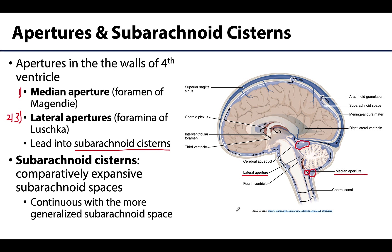For our purposes you don't need to know the specific names of the subarachnoid cisterns, though you may encounter them elsewhere in the curriculum. These cisterns are continuous with the more generalized subarachnoid space that surrounds the entirety of the central nervous system, including around the spinal cord. Keep in mind that while CSF flows within the subarachnoid space, neurovasculature is also located here — including the blood supply for the brain and cranial nerves.